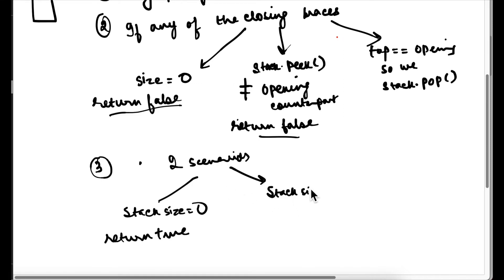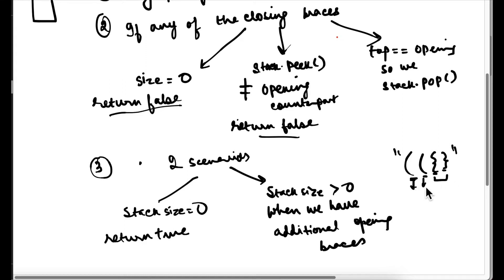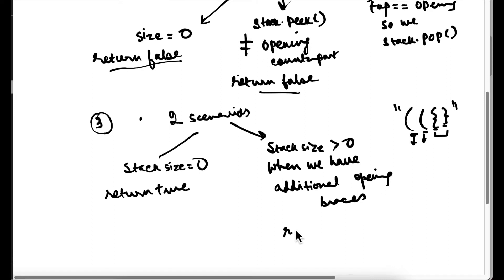Otherwise, if the stack size is greater than zero, it means we still have certain elements in the stack. This happens when there are additional opening braces that never had closing counterparts. For example: some braces were pushed, one pair was matched and popped, but the remaining two never had closing counterparts and stayed in the stack. Because of this the expression is not a valid parenthesis, so we return false. Apart from mismatched pairs, additional unclosed opening braces also require returning false.